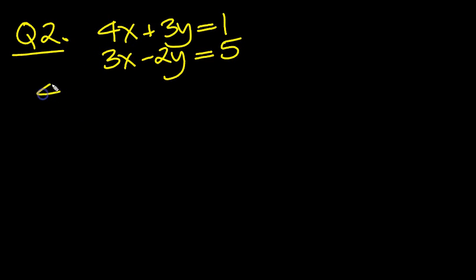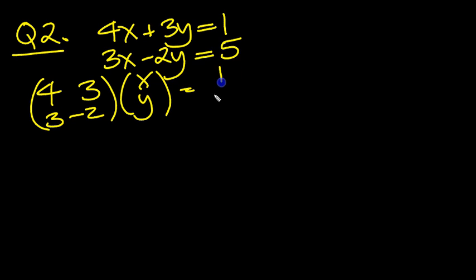OK, then let's write this one in matrix form. Everything's in the correct positions, isn't it? So it'll be 4, 3, 3 minus 2 times x, y is equal to 1, 5.